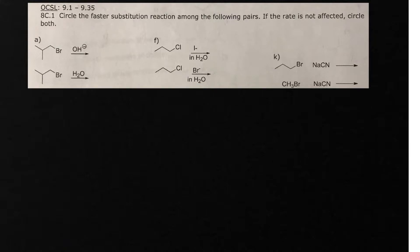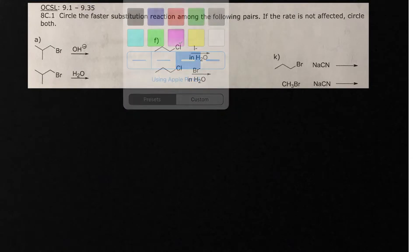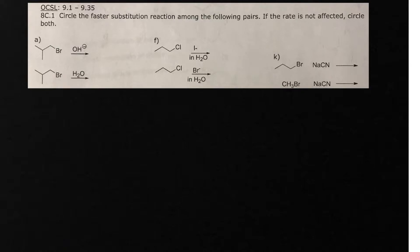In this video, this is the meat and potatoes of everything. We need to decide which reaction is faster. There are many factors that affect the rate, so let me take you through this slowly and very clearly. What we first want to do is identify if the reaction is SN1 or SN2, and then see what factors affect that. First off, we want to look at our alkyl halide.